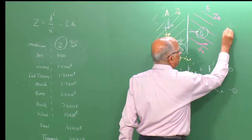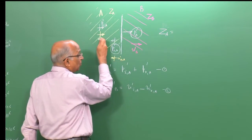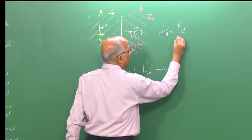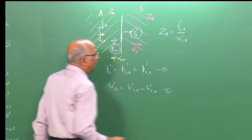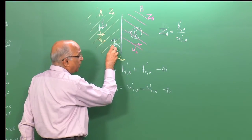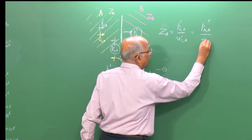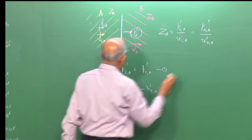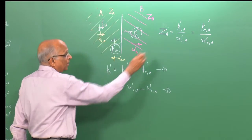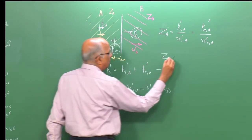I can write: Z_a = p_ia prime / u_ia prime. Similarly for the reflected pressure: Z_a = p_ra prime / u_ra prime. And the impedance of B: Z_b = p_b prime / u_b prime.